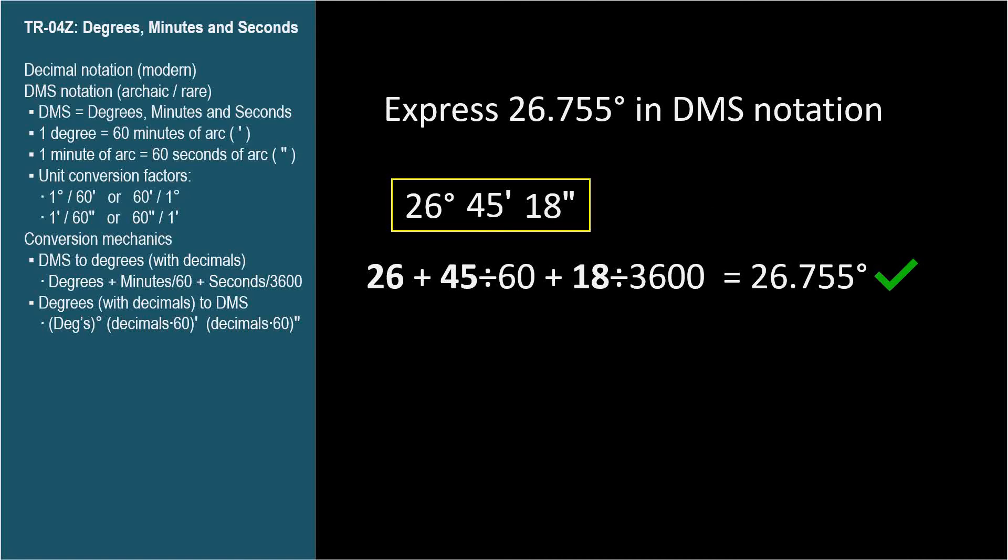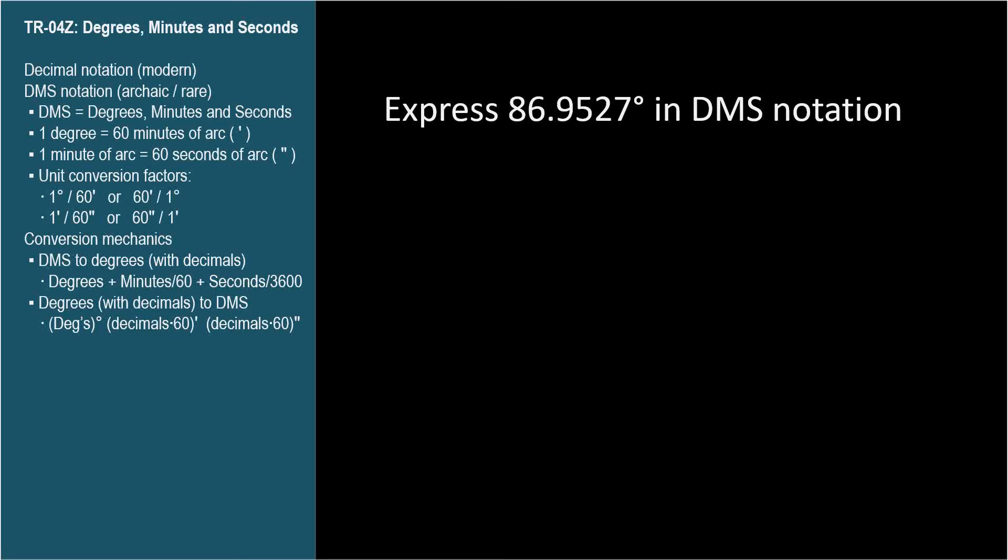Here's another. What's 86.9527 degrees in DMS notation? We have 86 degrees, and keep that. .9527 times 60 equals 57.162, so we have our minutes, 57.